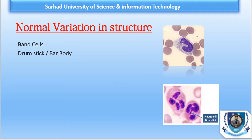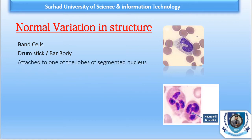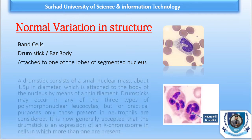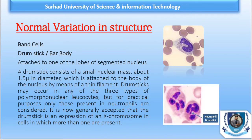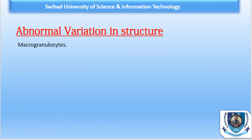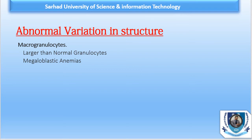Apart from normal variations, a number of abnormal variations are also found in granulocytic morphology, including Döhle bodies, hyper-segmented neutrophils, macro granulocytes, Pelger-Huët anomaly, Alder-Reilly anomaly, Chédiak-Higashi anomaly, and myeloperoxidase deficiency. The first abnormal variation is macro granulocytes. As the name indicates, these are granulocytes of larger than normal size, commonly found in people suffering from megaloblastic anemia.